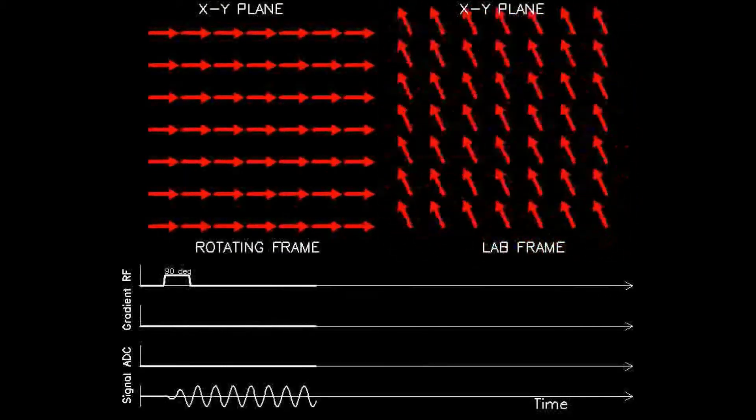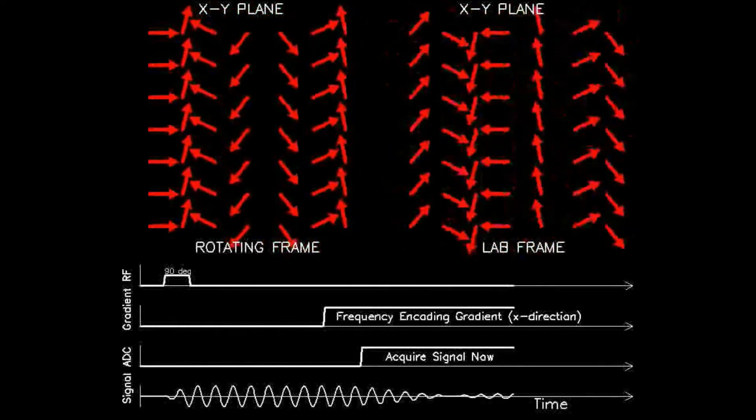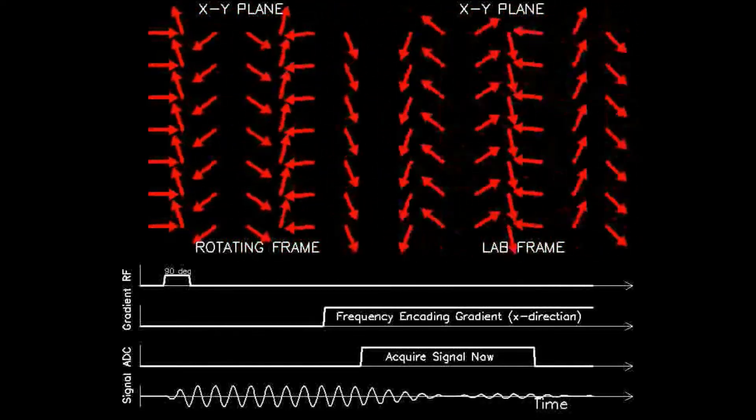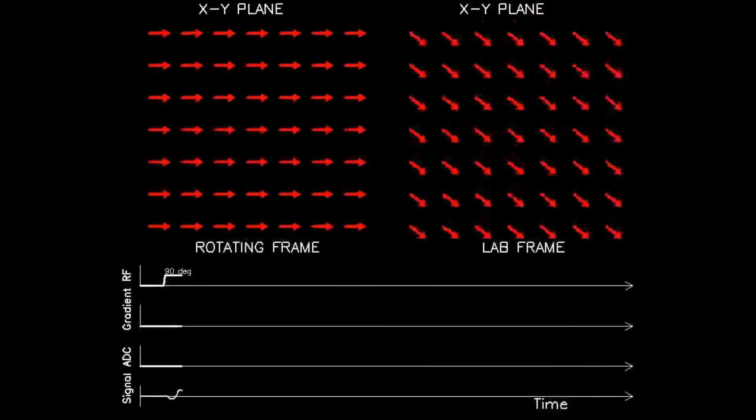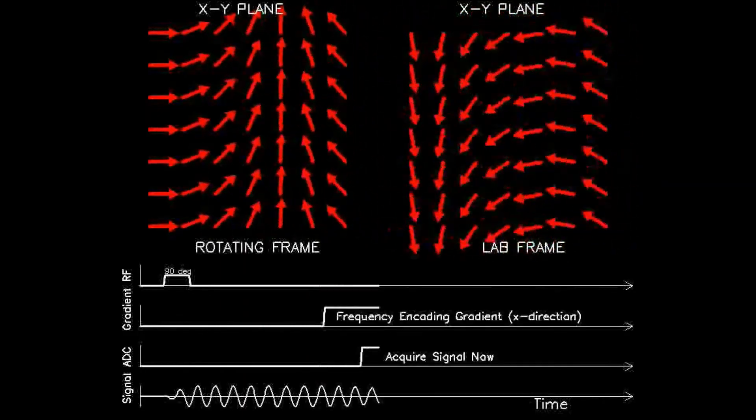Notice that this encoding is provided only as long as the gradient is on. As such, signal acquisition must occur during this time. This is in contradiction to phase encoding, the next animation for which the gradient is turned off before signal acquisition.